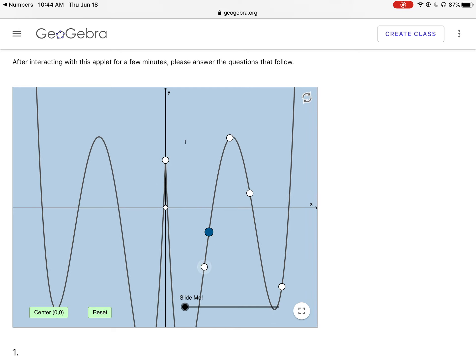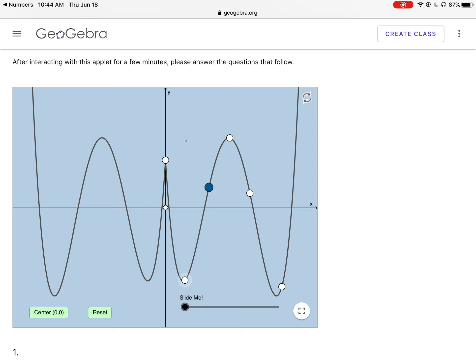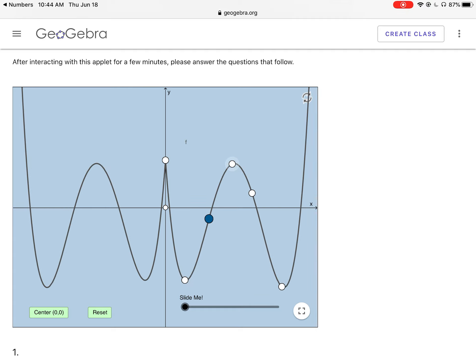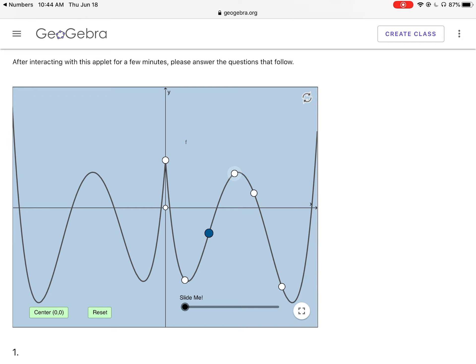And what I'm hoping you're noticing is that no matter what, this function is always going to be symmetric with the y-axis. There's always symmetry with the y-axis. That's how we can tell graphically that it is an even function.